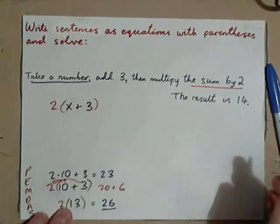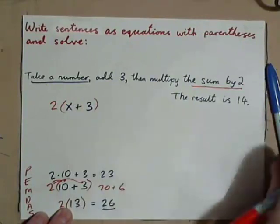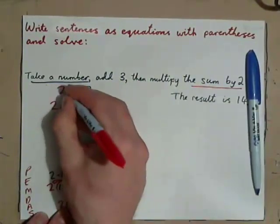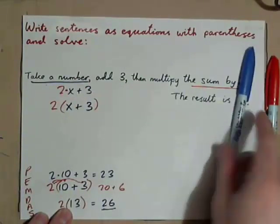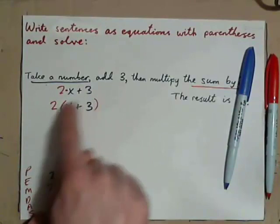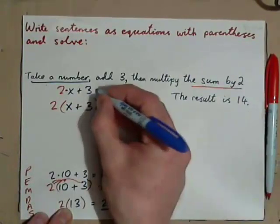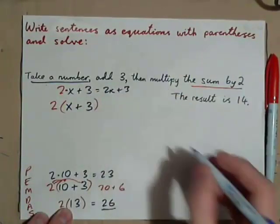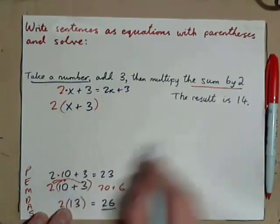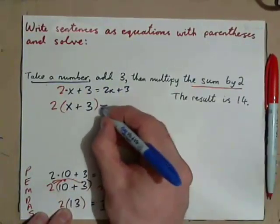What is incorrect is to do this: x plus 3, and then just go 2 times x. It should be 2 times x plus 3 in parentheses, the whole thing, 2 times the entire sum. Because this would just be 2x plus 3, whereas this one would be 2x plus 6. The result is 14, so this is 14.